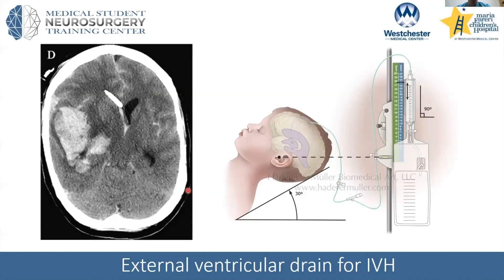One of the treatments, or one of the times when we do this procedure called an external ventricular drain, is when there's intraventricular blood. You can imagine that some of these blood products will either physically block off the flow of cerebrospinal fluid, or as they break down and are absorbed, they could scar some of the arachnoid granulations used to absorb CSF, leading to hydrocephalus — hydro meaning water, cephalus meaning brain — a condition of water on the brain.